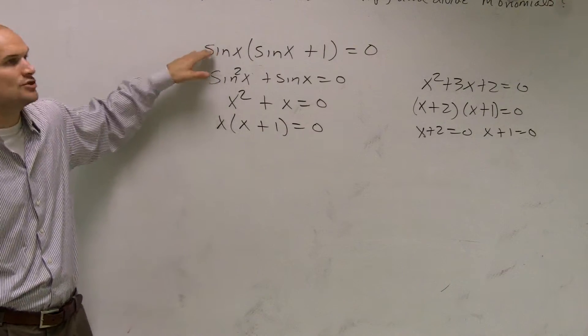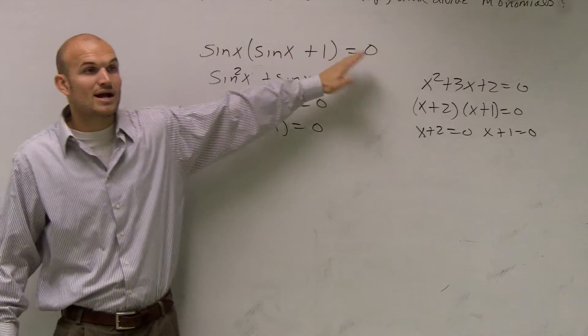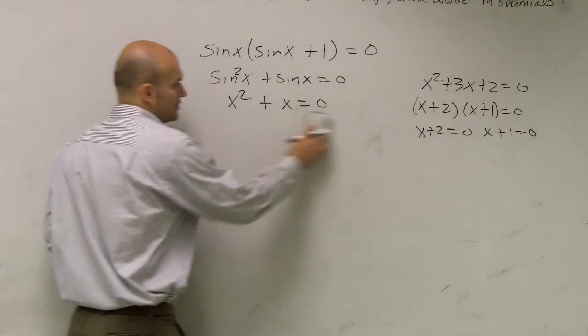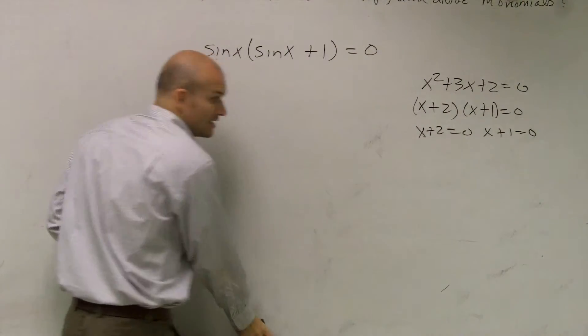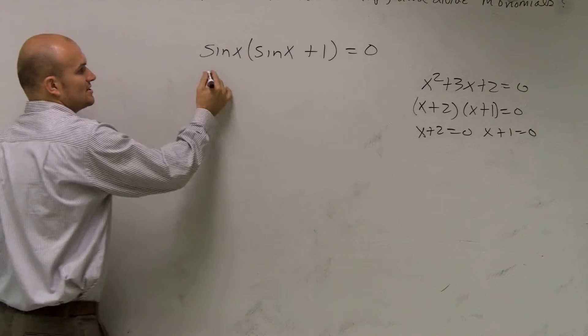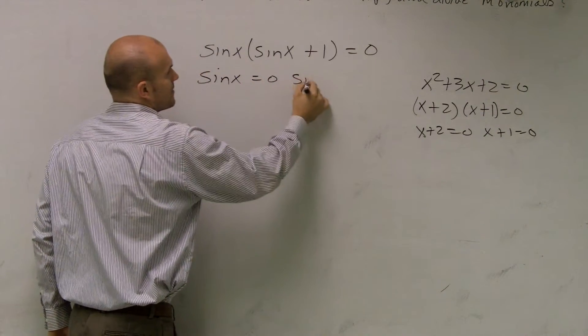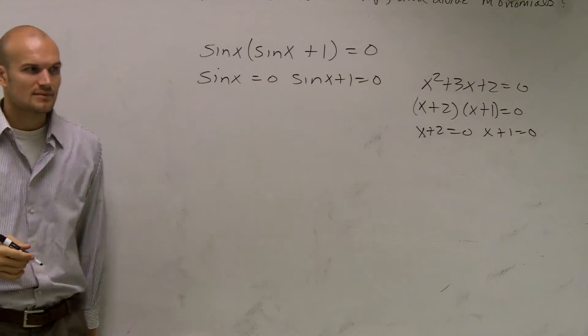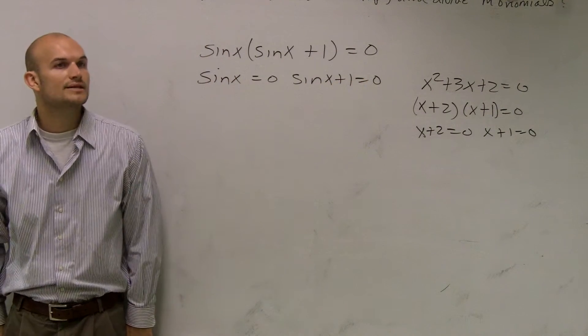So what we have is two products, and we have a product that equals 0. So it's already factored for you. All you need to do is solve sin(x) = 0 and sin(x) + 1 = 0.